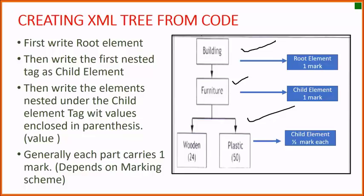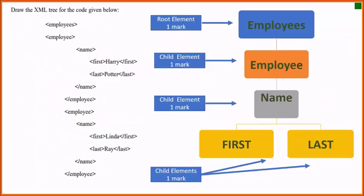All nested elements come under one child element, which will be the parent element for the first children. In this question, we have seen that 'Employees' is the root element, and there are two employees. 'Employee' is the child element under 'Employees', 'Name' is under 'Employee' and a child element of this tag. Under 'Name', we have 'First' and 'Last', two nested elements which are the child elements of 'Name'.